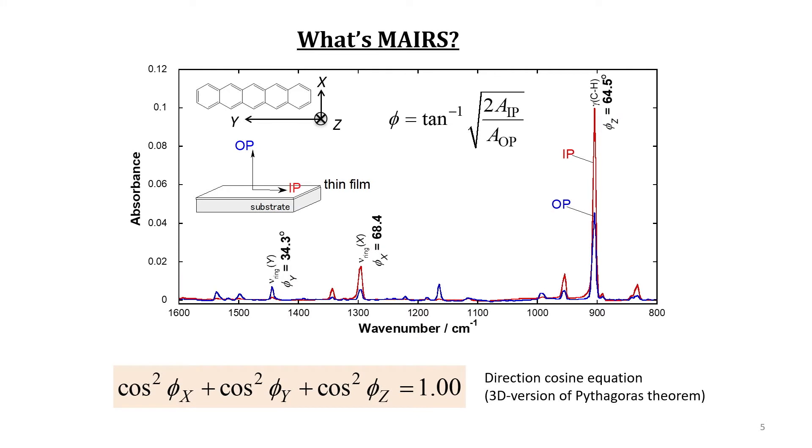I'm showing you a MAIRS spectrum of a pentacene film on silicon. Pentacene is a stiff molecule and a short long axis and a plane normal directions are named X, Y, and Z respectively, which are mutually orthogonal.